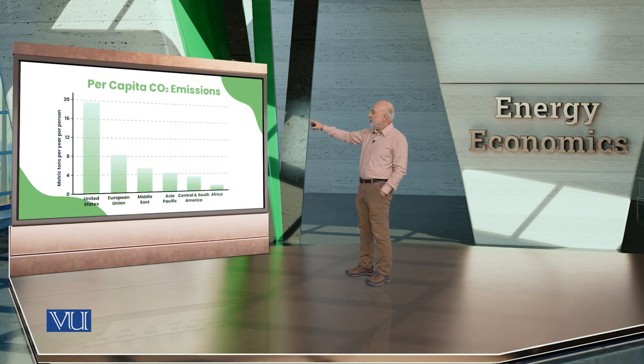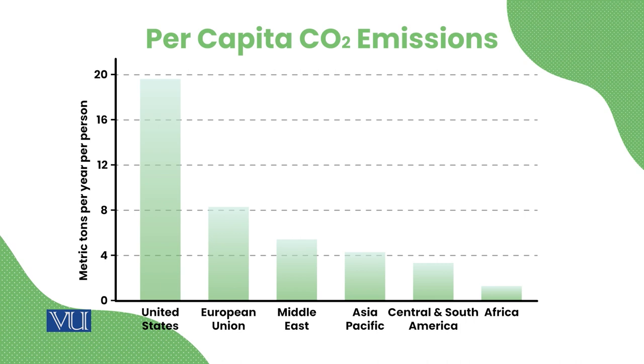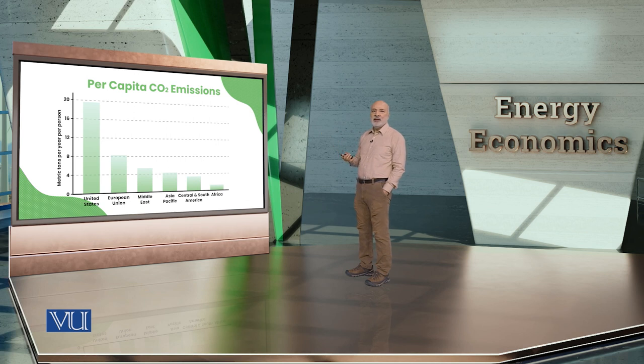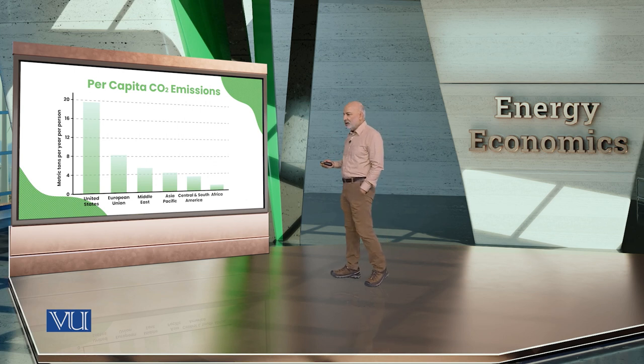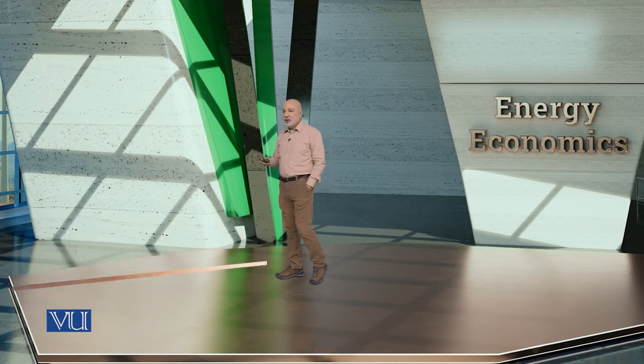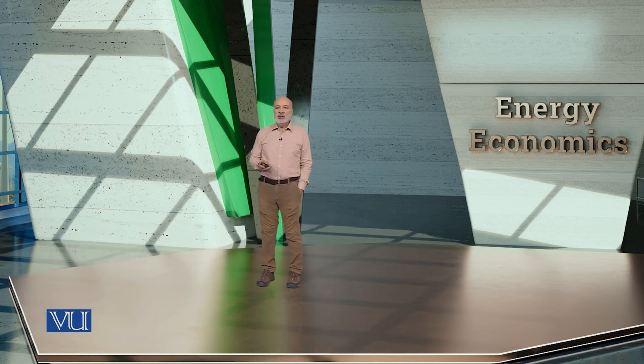Regarding per capita emissions — if we look at the United States, it is more than double that of the entire European Union combined. China is somewhere in the Asia-Pacific region, likely hidden there, because their population is so large that per capita emissions become very low. With so many people, you can't lift everyone's burden at once — everyone has their own energy needs. So these industrial countries, including China, are responsible. There are massive amounts of emissions from China, the United States, and particularly the G8 western nations. If they don't do something for the solution, it will be very difficult.